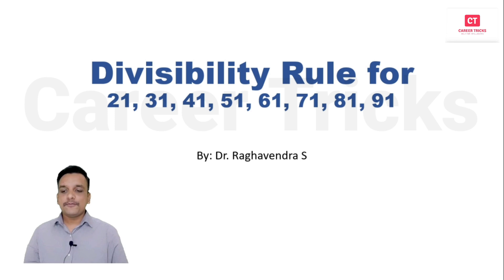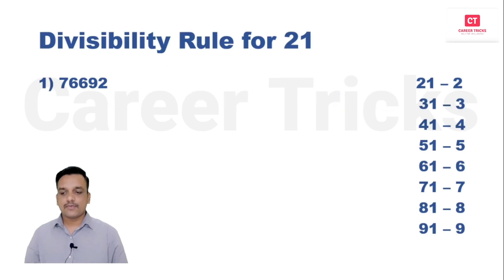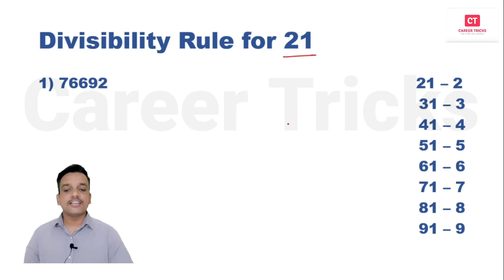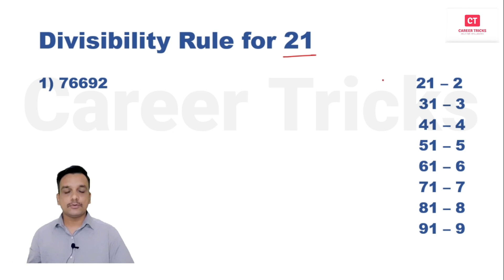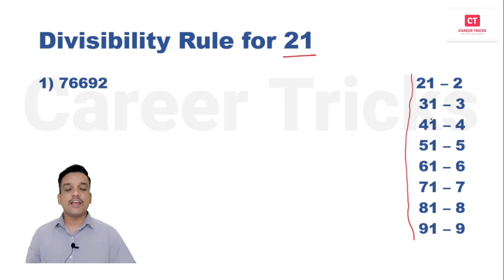In this video we are going to learn about the divisibility trick for 21, 31, 41, 51, 61, 71, 81, and 91. We'll move to the first problem now. Here we are checking with the divisibility rule for 21.